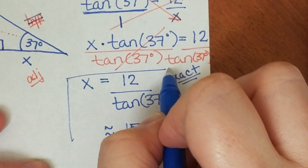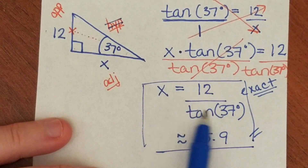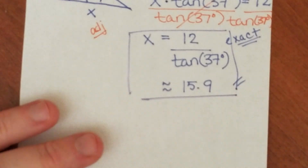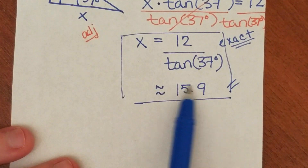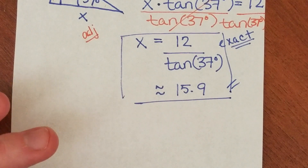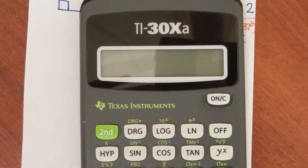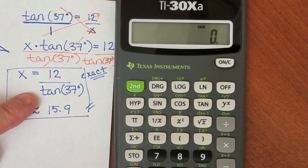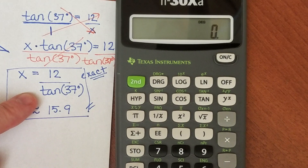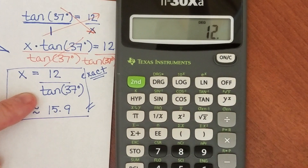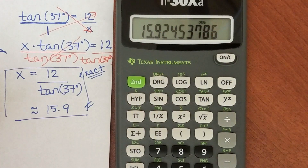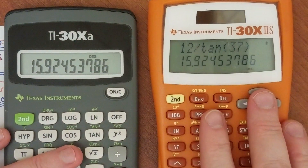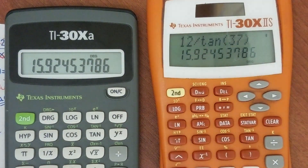So the exact answer you would leave as 12 divided by tangent of 37, and if they ask you to approximate, plug it into your calculator. Now I'll show you on the other calculator, the TI-30XA. This one you have to do one step at a time — the order is backwards. You type in 12 divided by 37, then hit tangent, then press enter. You get the same answer regardless of which calculator you use — 15.9.